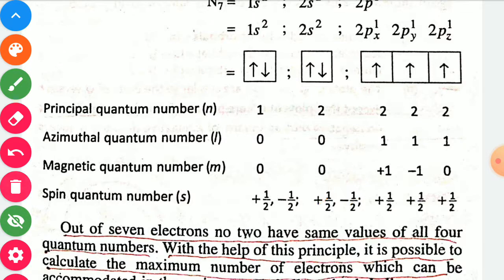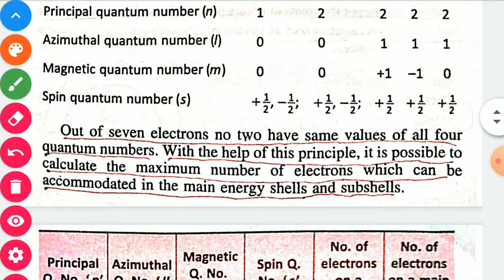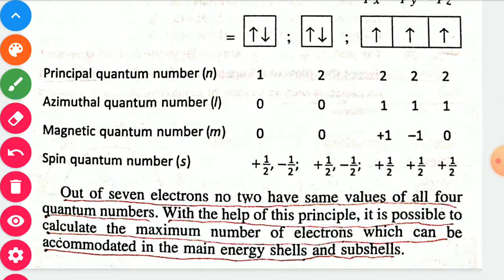Out of 7 electrons, no two have the same value of all four quantum numbers. If we compare the set of four quantum numbers — n, l, m, s — for all seven electrons, no two have identical values. With the help of this principle, it is possible to calculate the maximum number of electrons that can be accommodated in main energy shells and sub-shells.